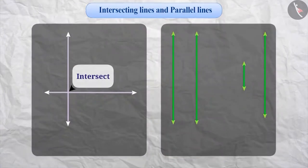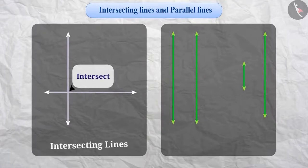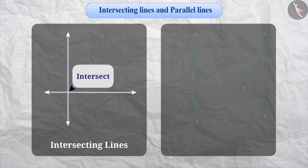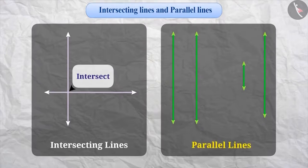The pair of lines that intersect each other are called intersecting lines, whereas a pair of lines that never intersect each other, even on extending them infinitely, are called parallel lines.